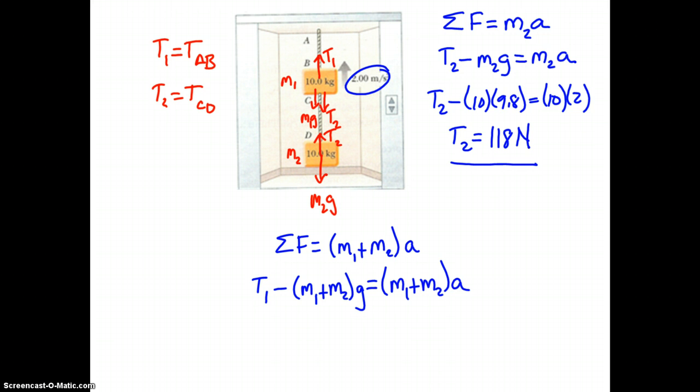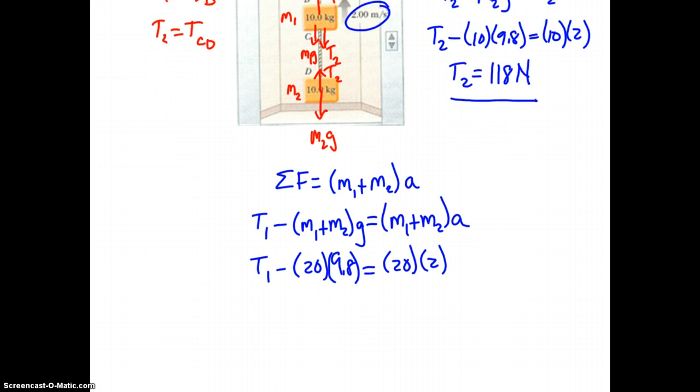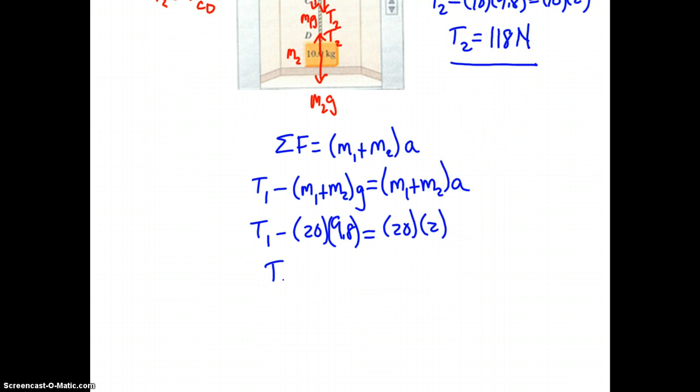Go ahead and substitute: T1 minus 20 times 9.8 equals 20 times 2. Solve algebraically. Pause the video if you need a moment. And we get 236 newtons.